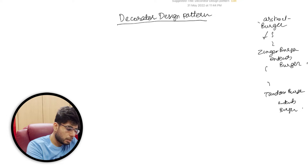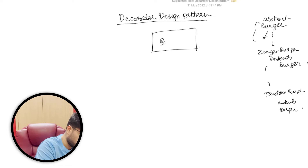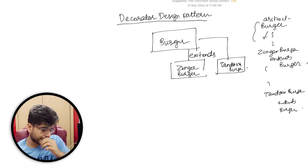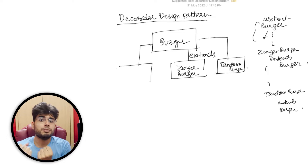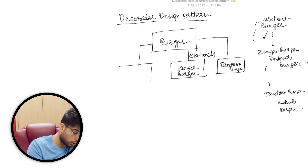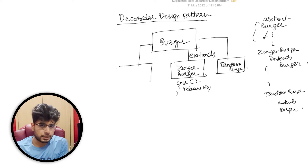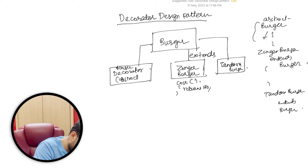Let's jump into the design. There will be a burger class with some properties, and Zinger Burger as well as Tandoori Burger and different types of burger will extend the burger class. I've done the class diagram here. So apart from Zinger Burger and Tandoori Burger extending the burger, I will create one more class. The problem I'm trying to solve is decorating the burger — decorating the Zinger or Tandoori Burger with different items and then finding out the ultimate cost.